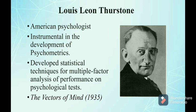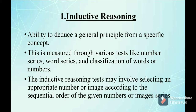The first primary mental ability is inductive reasoning — the ability to find rules or logical reasoning. It is the ability to find general rules and principles from given information, involving the ability to deduce a general principle from specific concepts. This ability is measured through tests like number series, word series, and classification of words or numbers. An inductive reasoning test may involve selecting an appropriate number or image according to the sequential order of a given series.